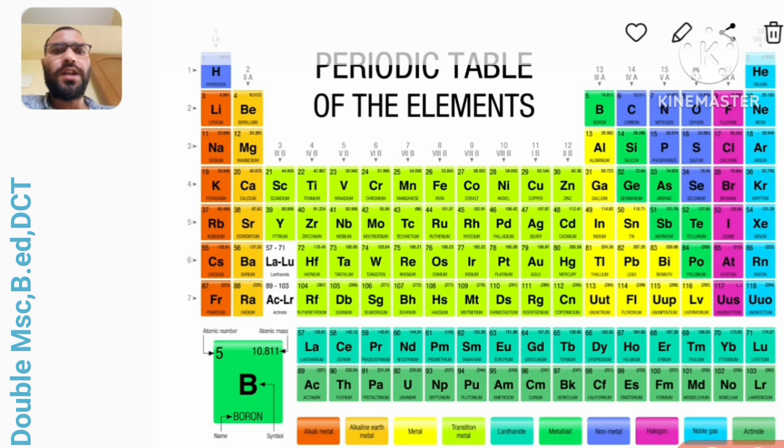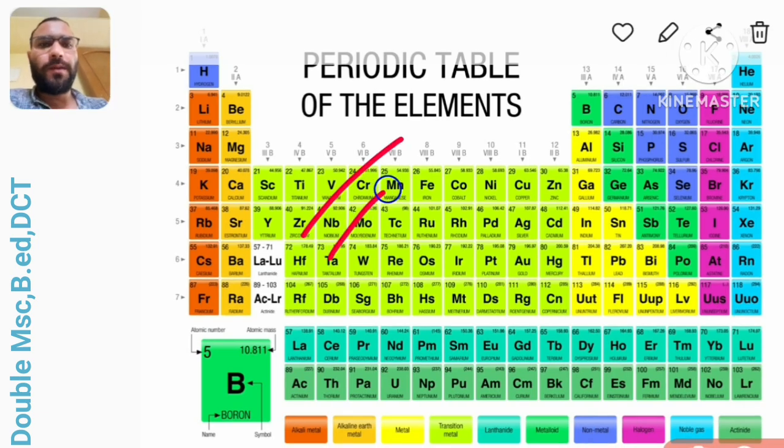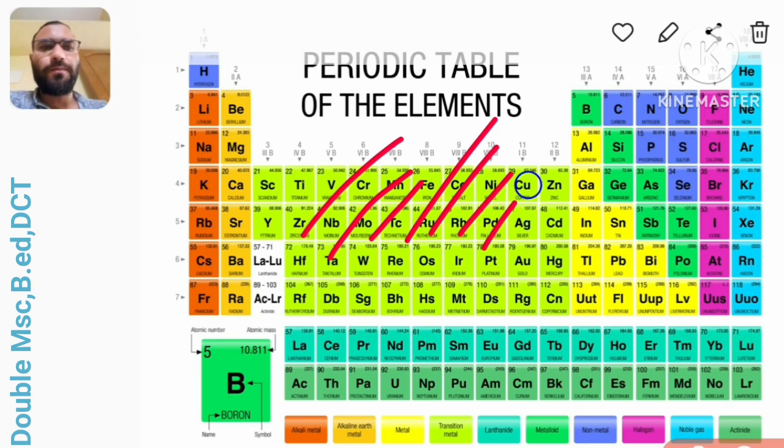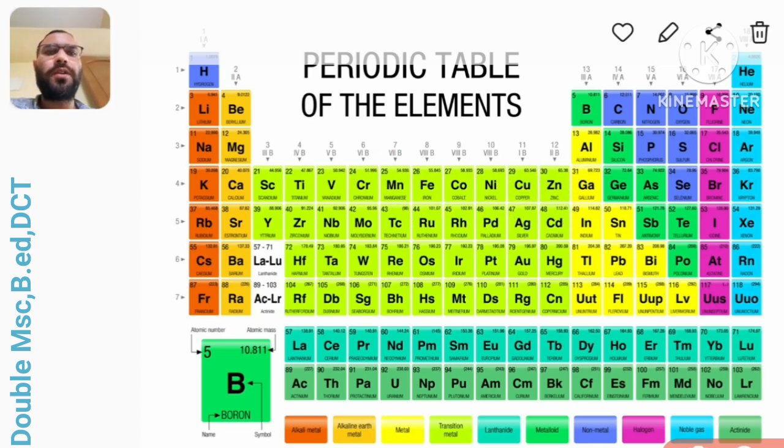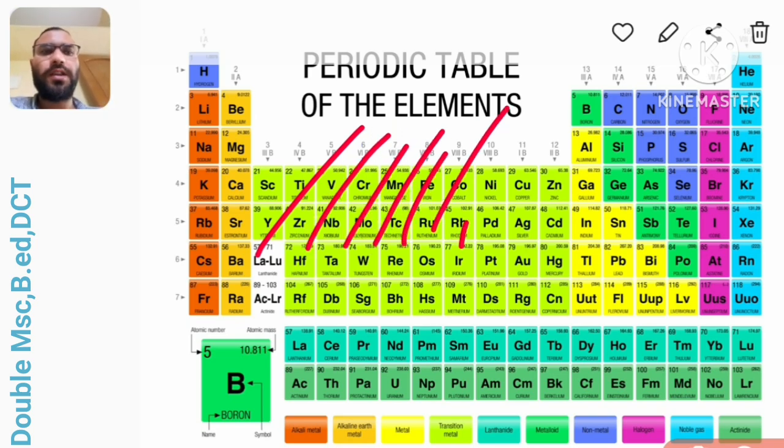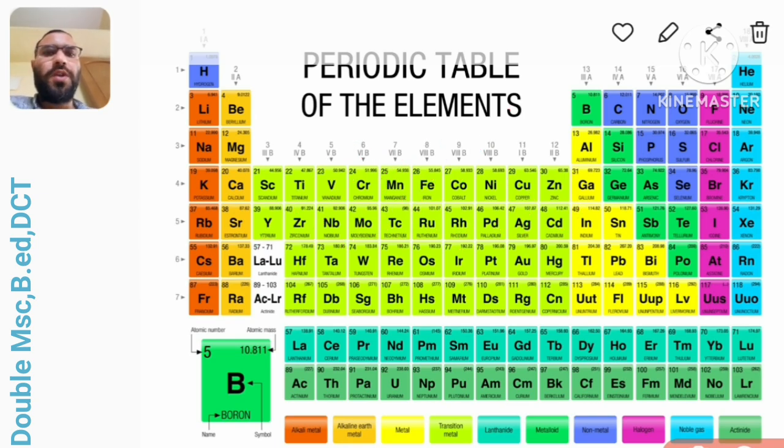One more series that is called the 5d series that starts from lanthanum up to mercury: hafnium, tantalum, tungsten, rhenium, osmium, iridium, platinum, gold, mercury. So here you have to remember: la hafta verna ray hoy either pitega or hospital gyna.